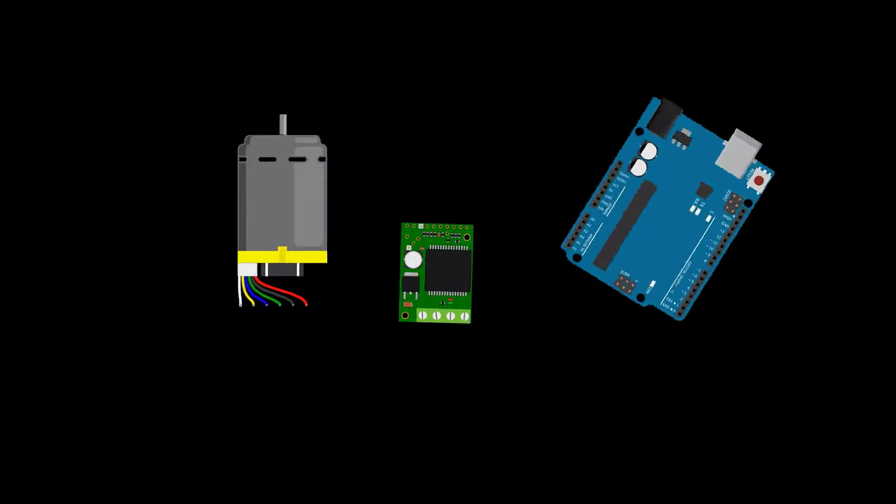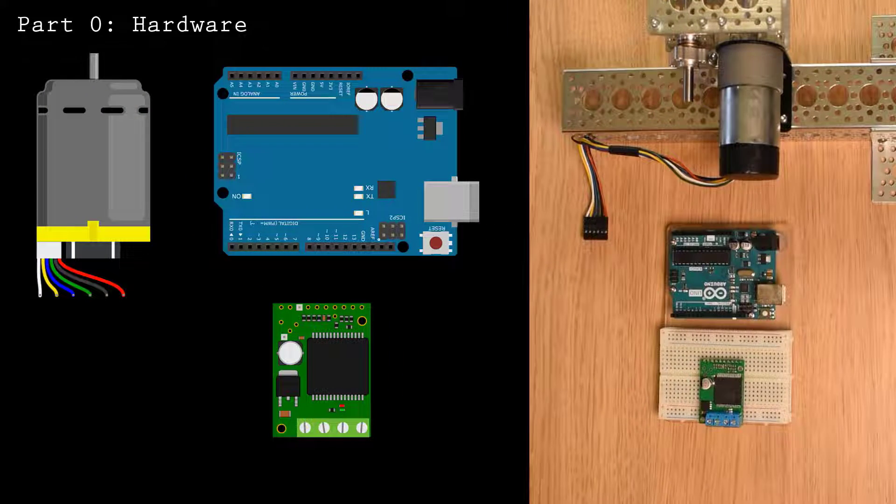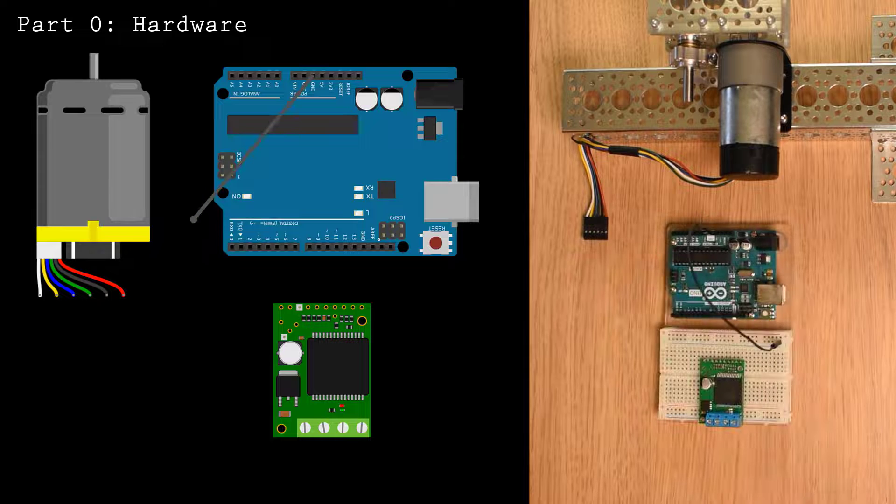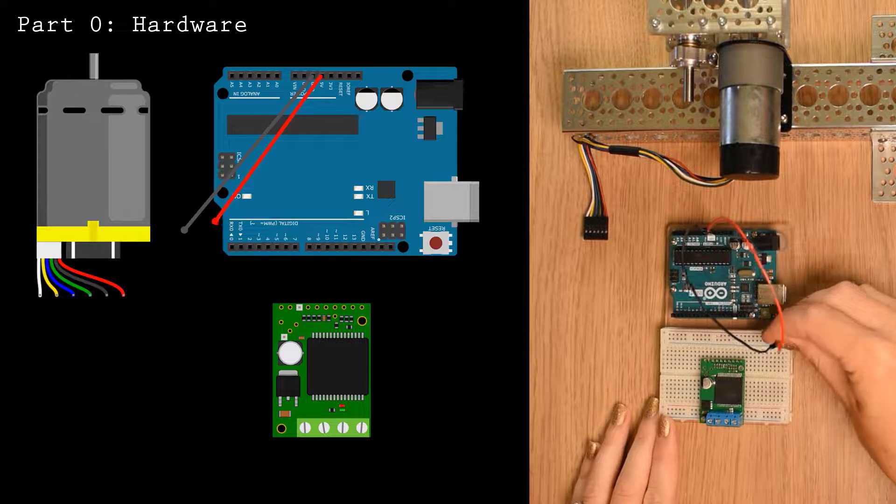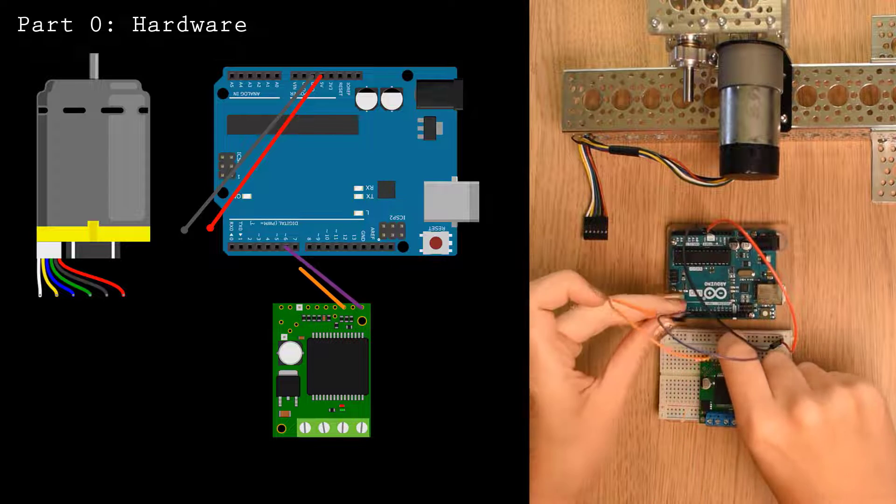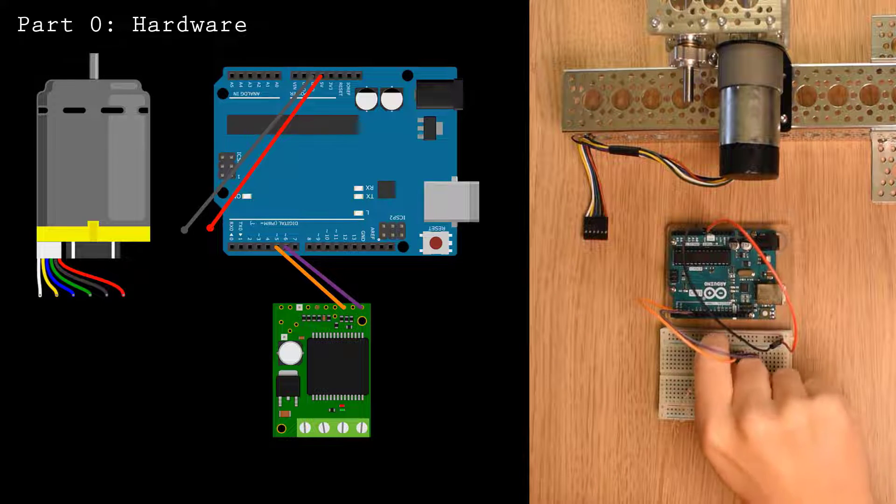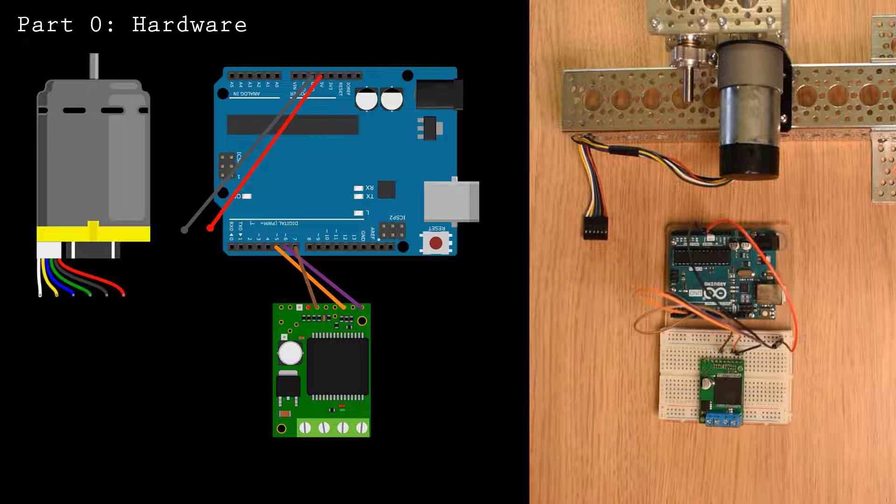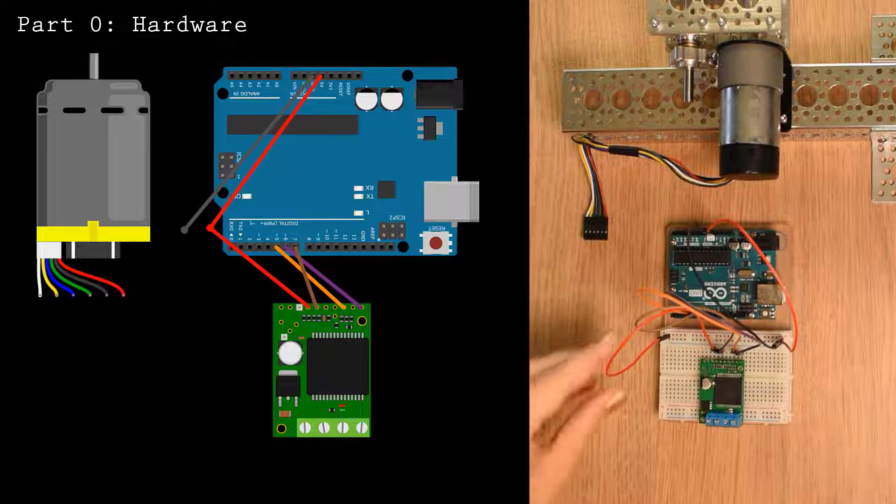For applications that require more precise speed control, you can use an encoder and a microcontroller to accurately control the speed. To control the voltage across the motor leads, connect the motor driver to your microcontroller.